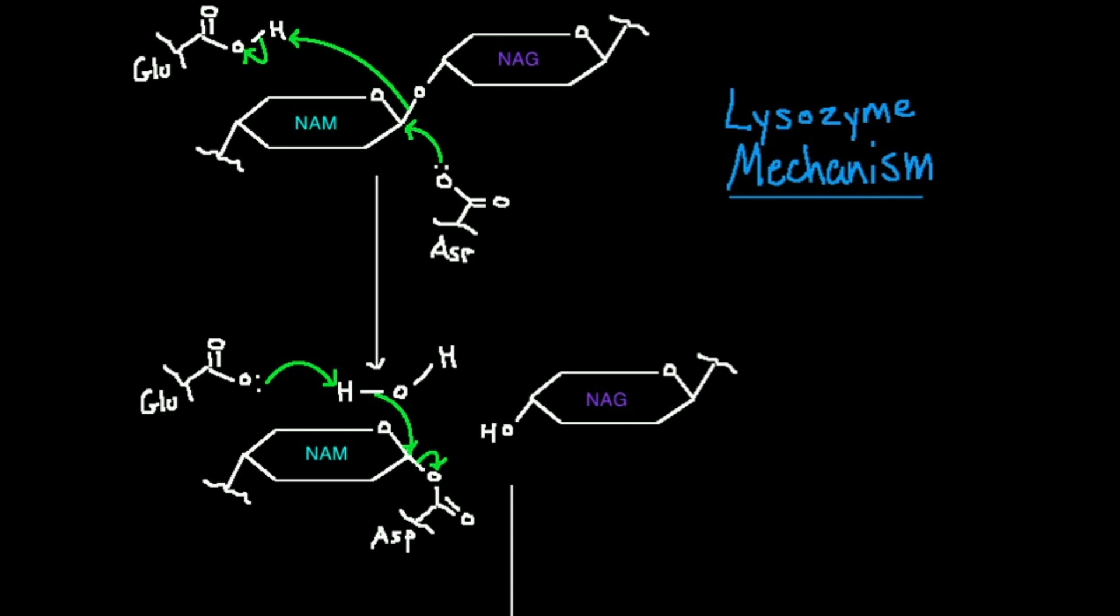Alright, so to familiarize ourselves with the setup, this is NAM, this is NAG. Lysozyme only breaks the NAM-NAG bond. It does not break a NAG-NAM bond. It's only this bond where on the left side you have NAM, right side you have NAG.